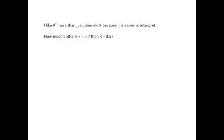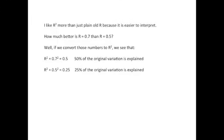I like R squared more than just plain old R because it's easier to interpret. Here's an example. How much better is R equals 0.7 than R equals 0.5? Well, if we convert those numbers to R squared, we see that when R squared equals 0.7 squared, it actually equals 0.5, which means 50% of the original variation is explained by the relationship. When R squared equals 0.5 squared, which equals 0.25, we see that only 25% of the original variation is explained by the relationship. With R squared, it's easy to see that the first correlation is twice as good as the second. Explaining 50% of the original variation is twice as good as only explaining 25% of the original variation.